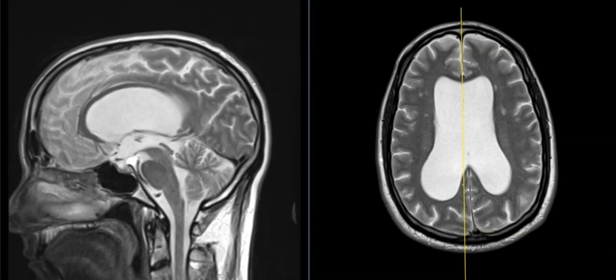Sometimes you can have scarring from a prior insult or blood products that can clog this. Other times you can have little congenital webs that have been there for the patient's whole life, causing narrowing here and slow buildup of the ventricles. Sometimes it's hard to tell. Luckily this can be treated by putting a catheter in and draining it out, or sometimes they can go in and perforate portions to let the fluid drain out. So this is something that's fairly easily treatable, thankfully.